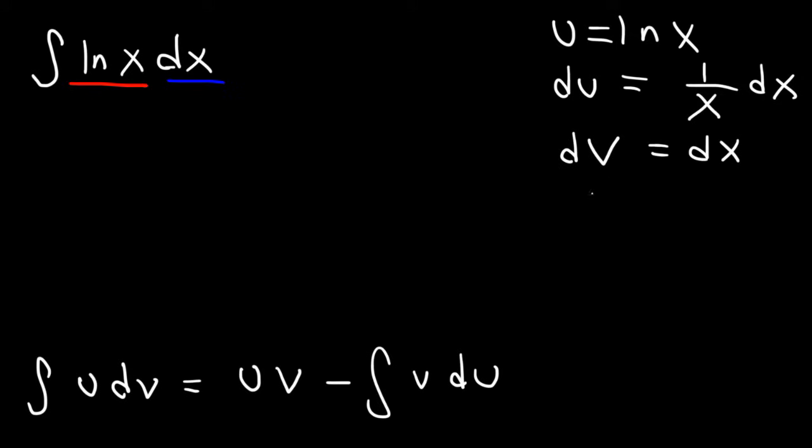So v is the integral of dv, and the integral of dx is going to be x. So using the formula, it's uv, which is ln x times x, minus the integral of v du.